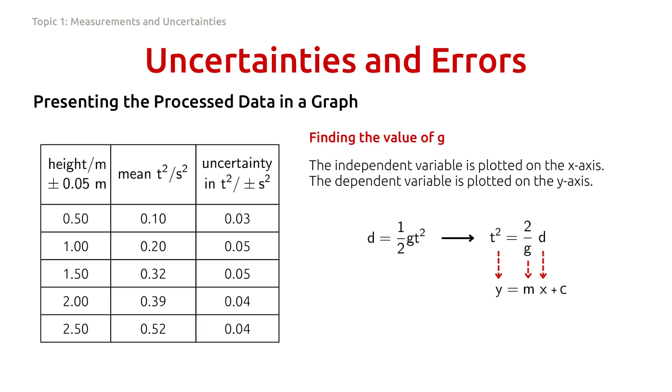But there is no c here, or the y-intercept in this relation. So we expect the line will cross the y-axis at zero. The t squared is the y, plotted on the y-axis. The d is the x, plotted on the x-axis. And the gradient m, or the slope, in this case is 2 over g.